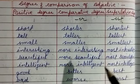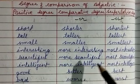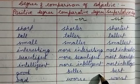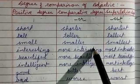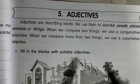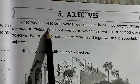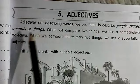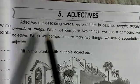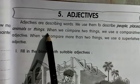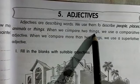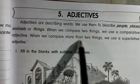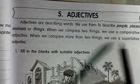Now come to the book work. Adjectives are describing words. We use them to describe people, places, animals or things. When we compare two things, we use a comparative adjective, and when we compare more than two things, we use a superlative adjective.